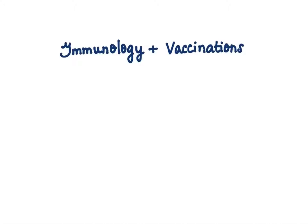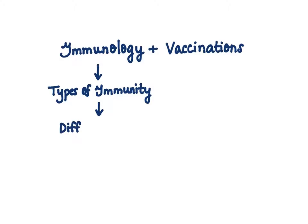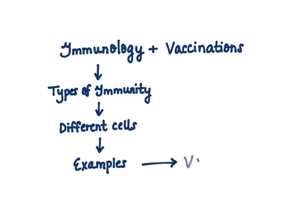Welcome to our video on immunology and vaccinations. We'll discuss a brief overview of the immune system, the various types of immunity involved, and the different cells that help mount an antibody response against invading pathogens. We'll focus specifically on vaccines — a very controversial topic — defining what a vaccine is, the different types and classifications, and the various components of manufacturing and distributing vaccines.